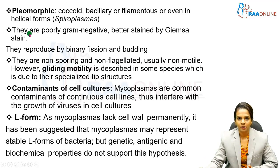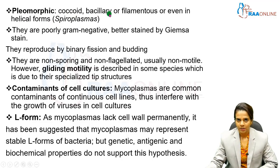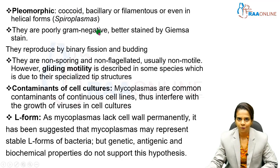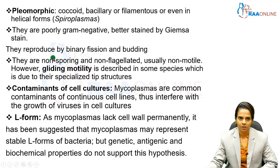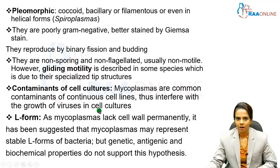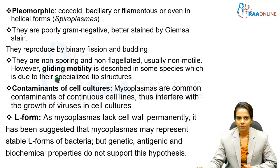A main characteristic feature of mycoplasma is that it is pleomorphic — it exists in variable morphological forms such as coccoid, bacillary, filamentous, or even helical forms, which is why some are called spiroplasmas. They are poorly stained by Gram stain but better stained by Giemsa stain. They reproduce by binary fission and budding, and they are non-sporing and non-flagellated. They exhibit gliding motility due to their specialized tip structure.